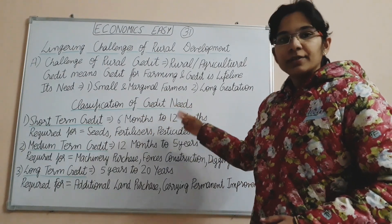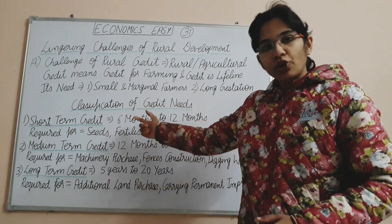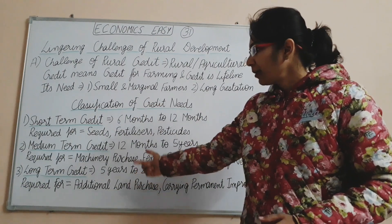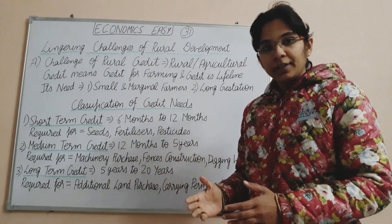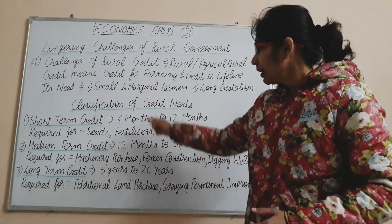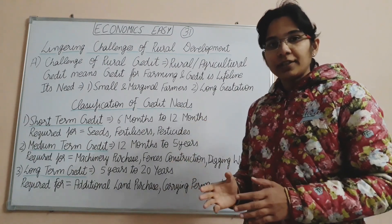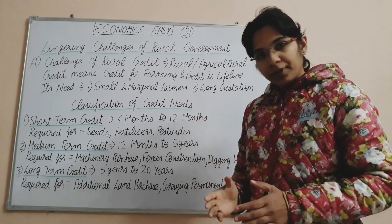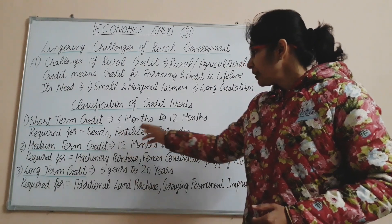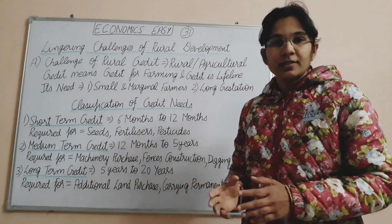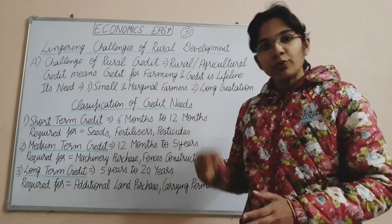Classification of credit needs — this is a three-mark question. There are three classifications: short-term credit, medium-term credit, and long-term credit. Short-term credit is given within 6 to 12 months. It is required for inputs such as seeds, fertilizers, pesticides, insecticides, and electricity.